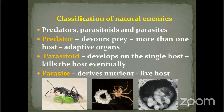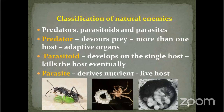When we call a natural enemy a parasitoid, it must develop on a single host — either externally or internally, what we call an endoparasitoid. The difference between a parasite and a parasitoid is that a parasitoid, also called a protelean parasite, actually kills the host in the process of development. But a parasite never kills the host — it derives nutrients from the live host.